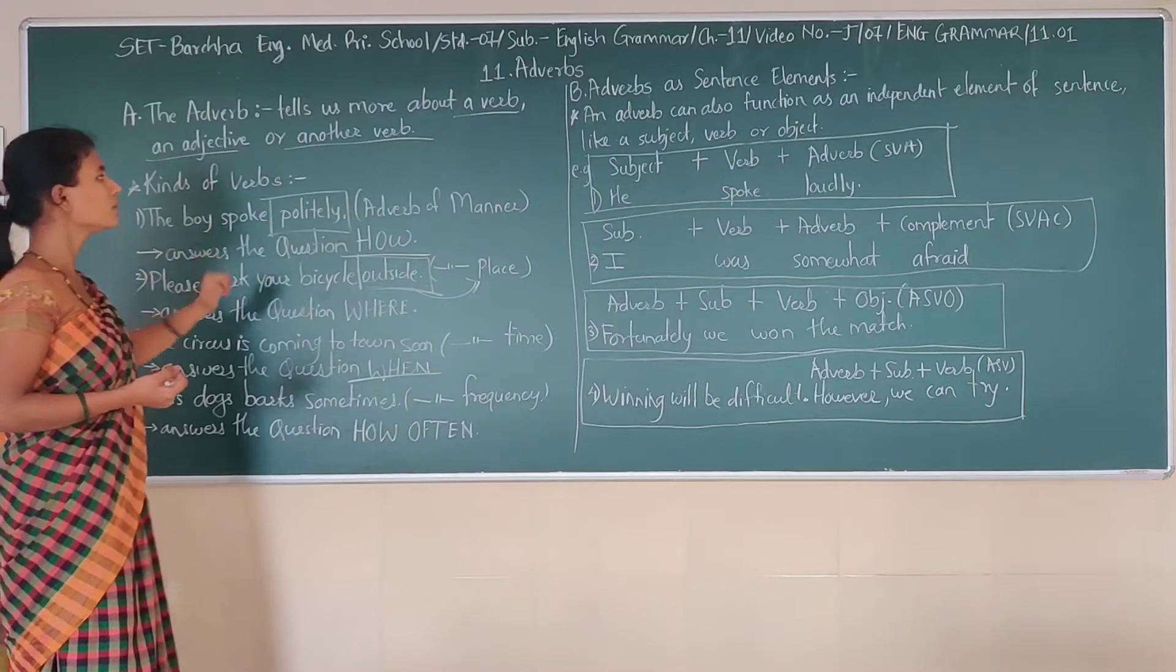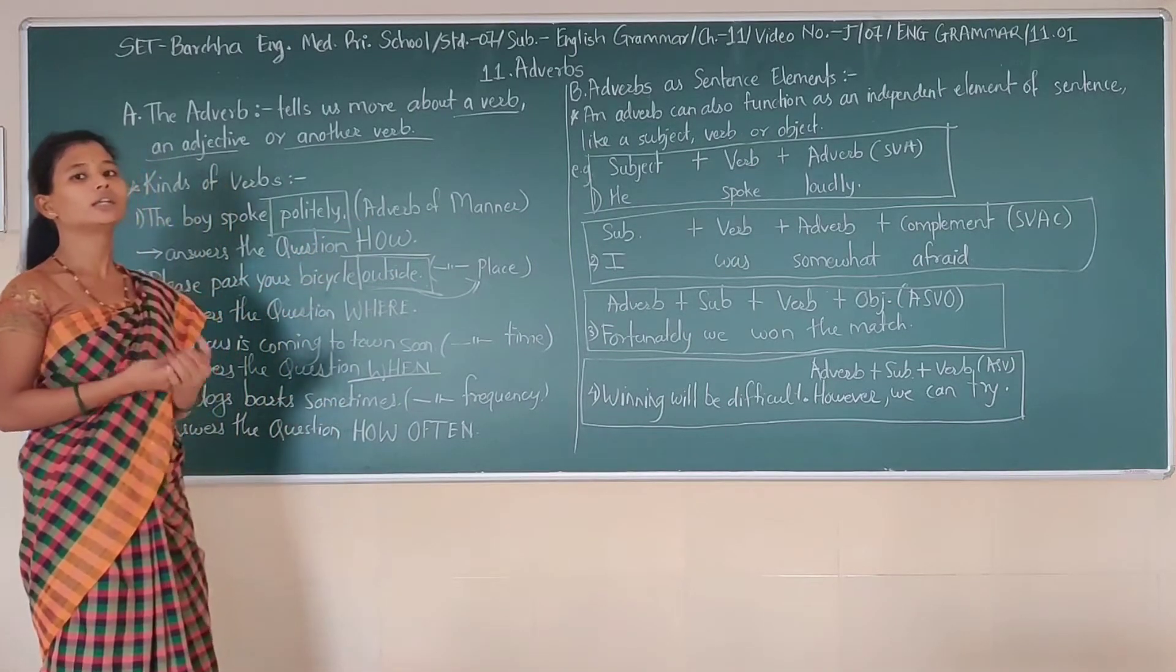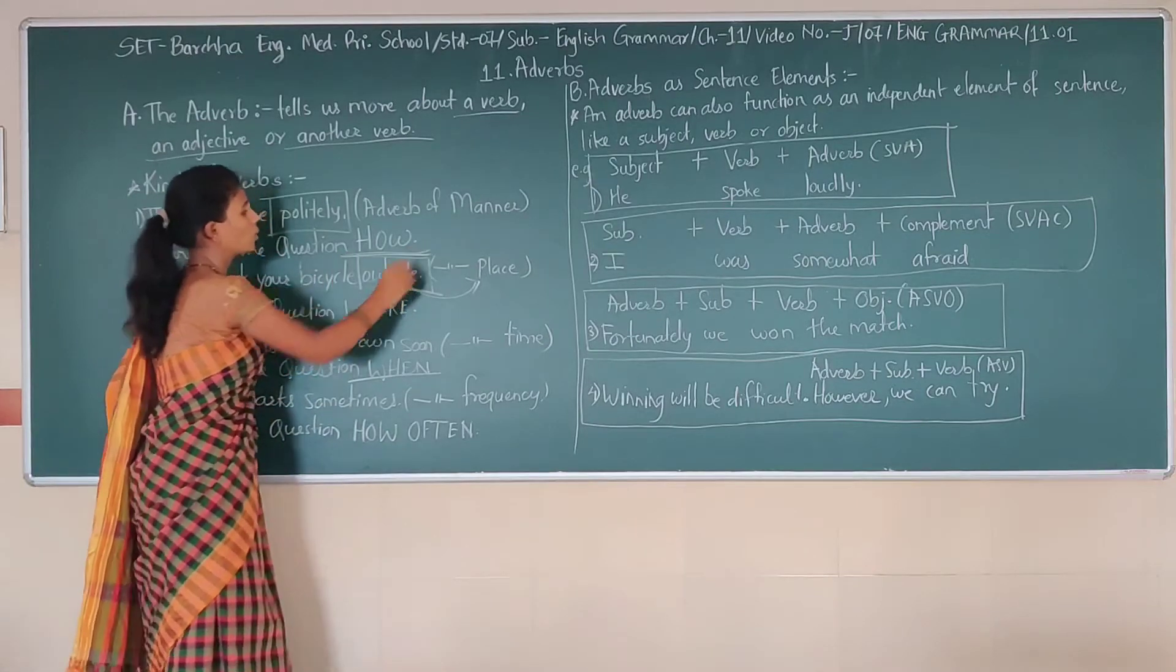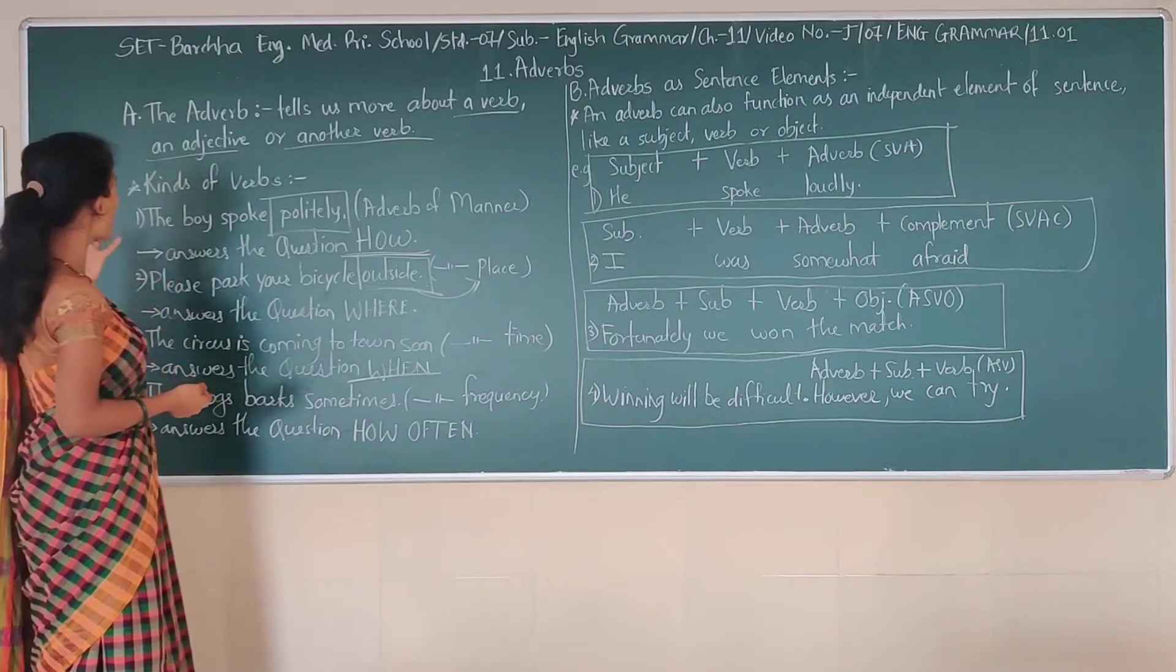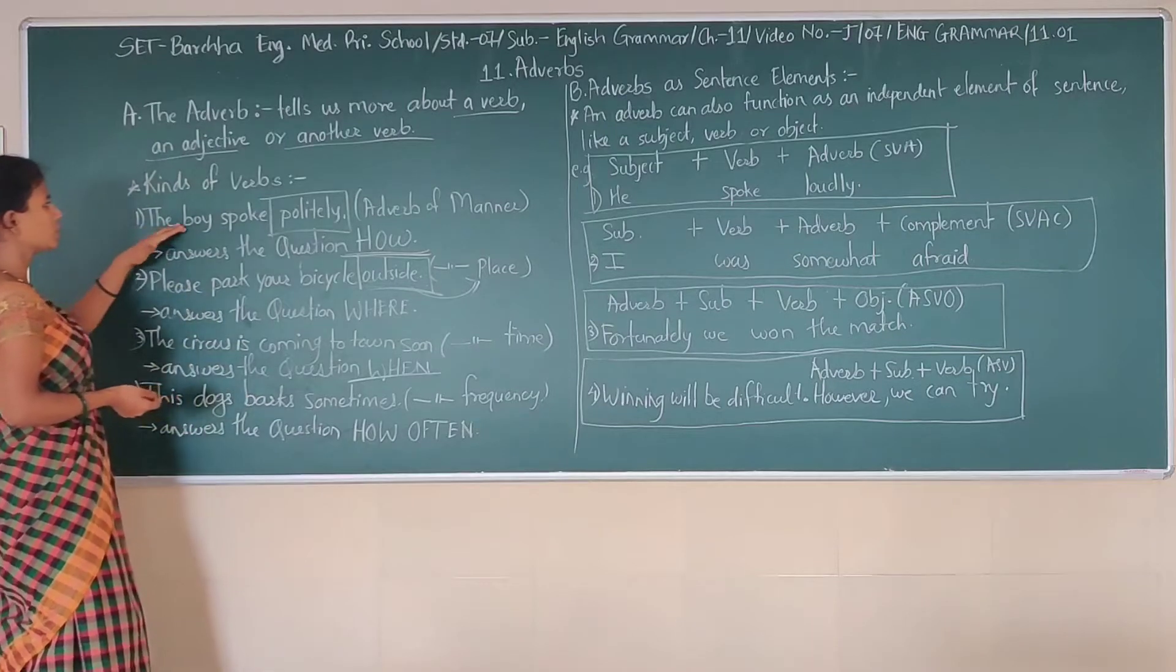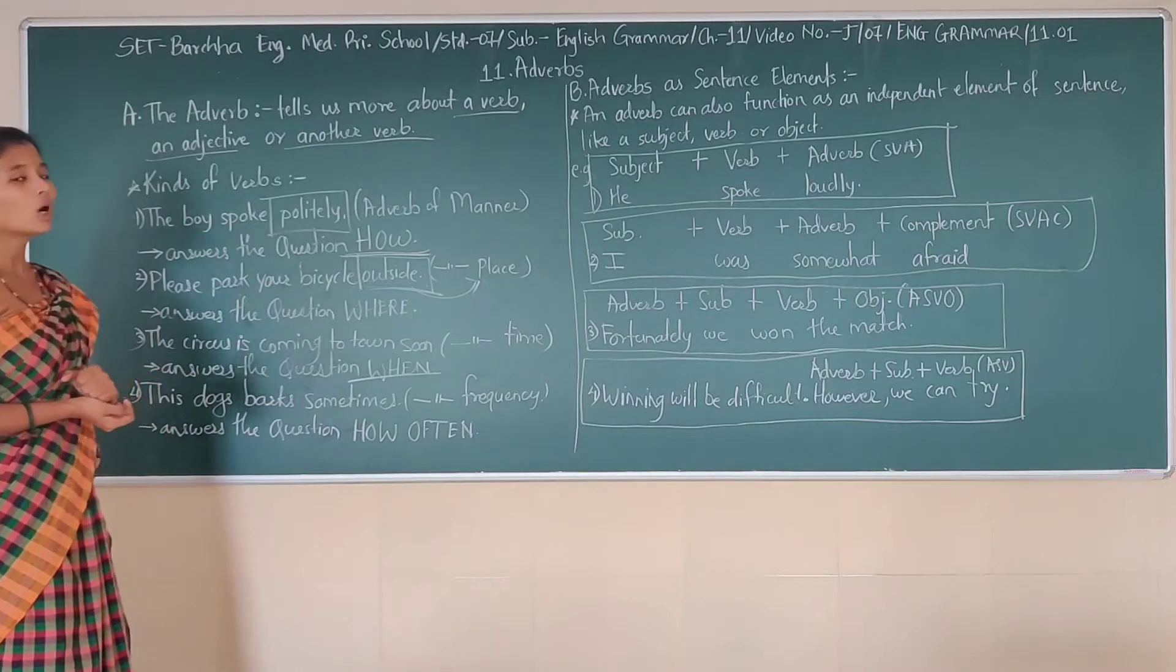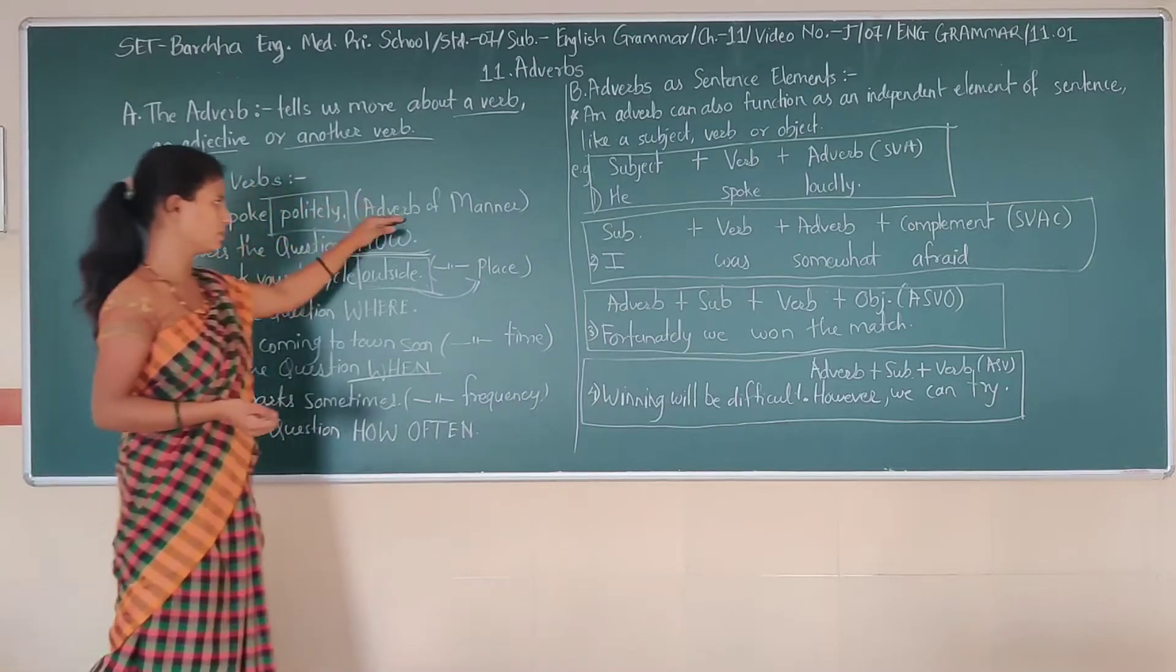So see the first one, adverb of manner. How can you find out that adverb of manner? If you want to find out, you have to question with how. Your question should be, how the boy spoke. So see the example, the boy spoke politely. Your question will be, how the boy spoke. So your answer will be politely, and that is your adverb of manner.